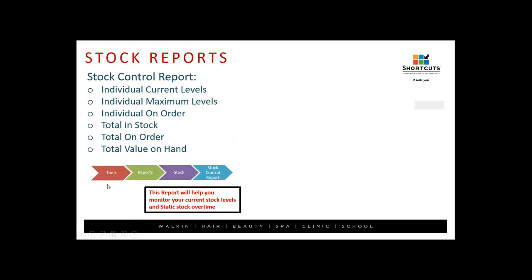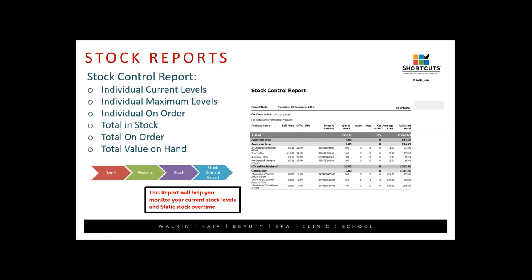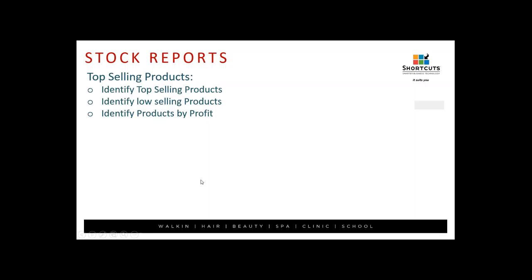There are a couple of other useful stock reports. The Stock Control report — found in Tools, Reports, Stock — tells you how many you currently have in stock, the individual maximum level, products currently on order, a total in-stock figure, a total on-order figure, and a total value on hand. It looks at both individual and total figures for all products.